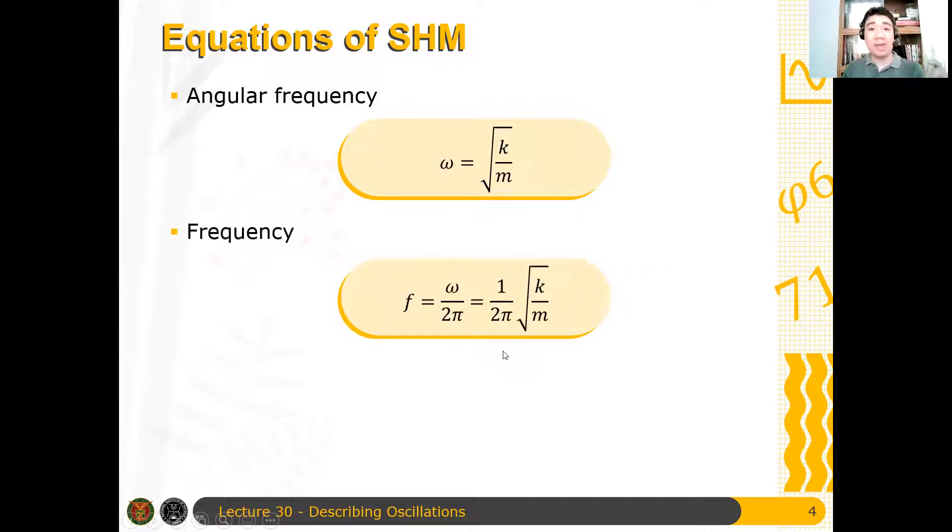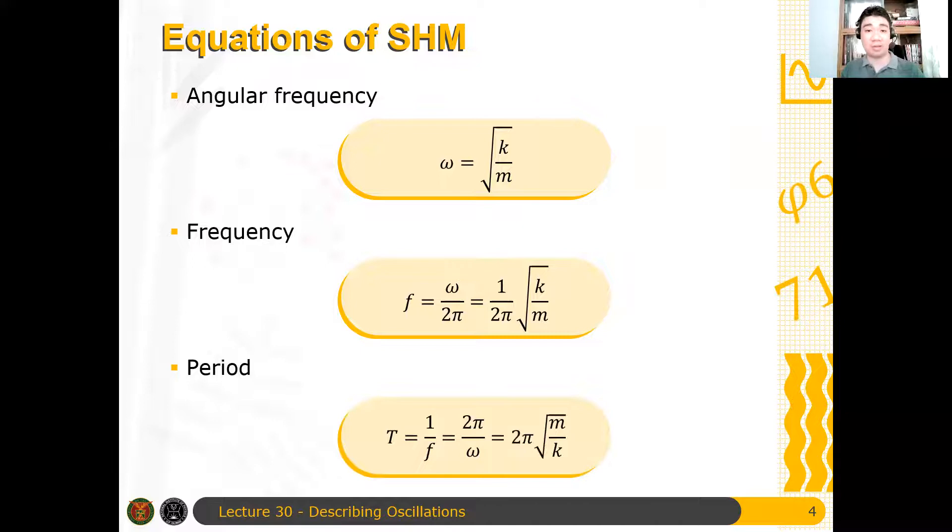And then from there, you can obtain other quantities such as the frequency, which is just omega over 2 pi, and the period, which is just the inverse of the frequency. We already have many problems on that in the previous discussion, so you can review those.